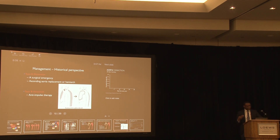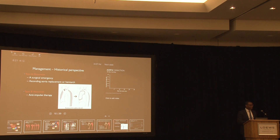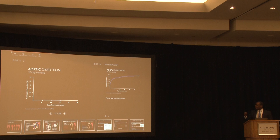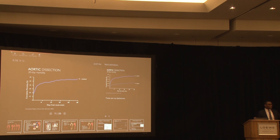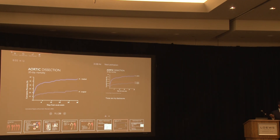Historically, Type A aortic dissection has been treated as an emergency — the patient goes straight to the operating room — while Type B has been managed with anti-impulse therapy or blood pressure management unless symptomatic. The reason: data from IRAD shows that if a Type A patient is managed medically, the 30-day survival is only 40% — meaning 60% will die without surgery. If we offer surgery, mortality drops significantly to 26%. So offering surgery cuts mortality from 60% to less than 30%, which is a big deal.